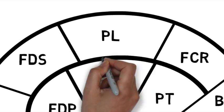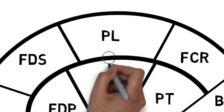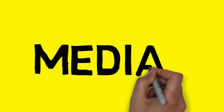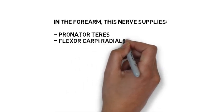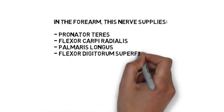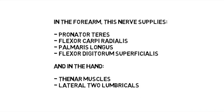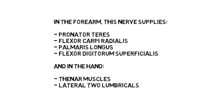Now let's place the nerves. Under palmaris longus you'll find the median nerve. The median nerve supplies a lot of muscles in the hand and forearm. In the forearm: pronator teres, flexor carpi radialis, palmaris longus, flexor digitorum superficialis. In the hand: thenar muscles and the lateral two lumbricals.